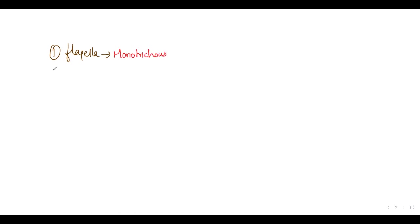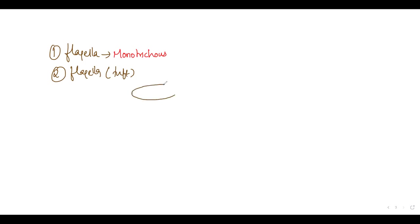If your bacteria is going to have two flagella but they are in a tuft — a bunch — and if this tuft is present on either side of the bacteria, then we are going to call it amphitrichous bacteria.